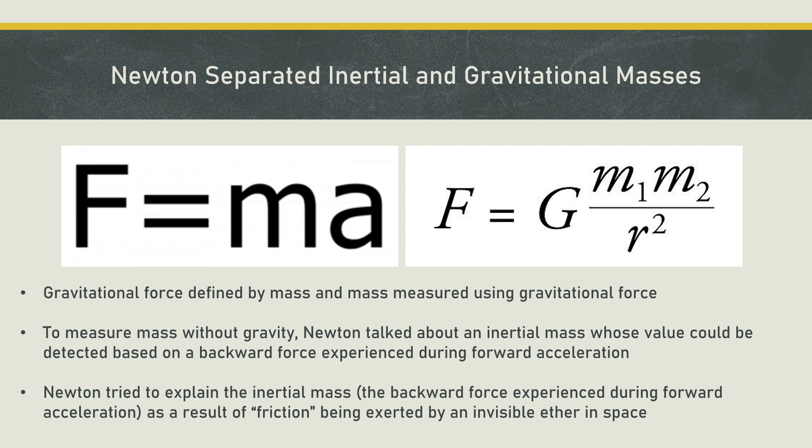To escape this circular definition of mass and gravity, Newton talked about another way of measuring mass through the backward force we experience while accelerating forward. Newton hoped to define mass through this backward force and then talk about gravitational force based on that mass. The Newtonian answer for why we feel the backward force during a forward acceleration was that there is an ether which drags the body backwards. Having removed the need for ether in the case of electromagnetic waves, Einstein sought to remove the ether from Newton's mechanics too.